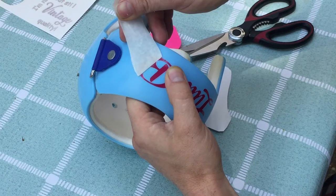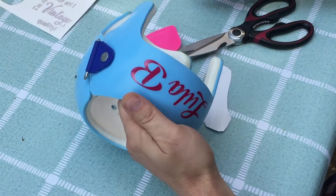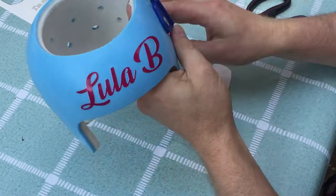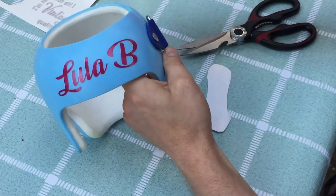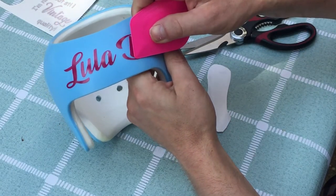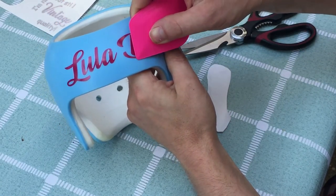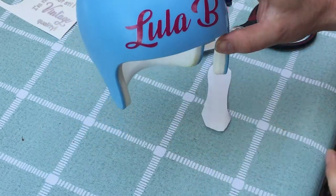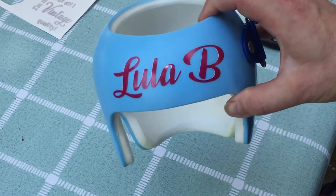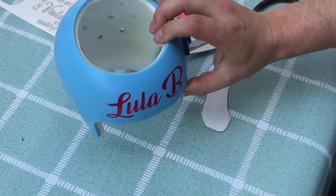Sometimes when you remove the transfer tape you'll see just a hint of a small wrinkle. You can go back with the squeegee and work that out in most cases. Let's see how it looks. That's perfect. There are no wrinkles or creases anywhere in the name.